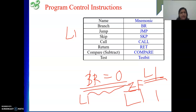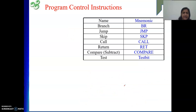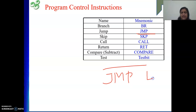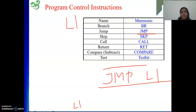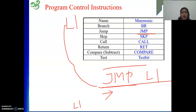The next instruction is JUMP. In case of JUMP we do not check any previous instruction result. We simply write JUMP L1 and we will jump to L1 — it could be forward or backward. Whenever there is a jump, we are not going to execute the next instruction in sequence; rather we go to whatever address L1 is representing.